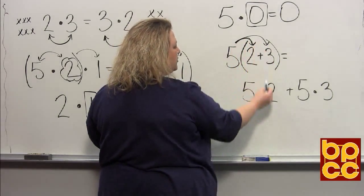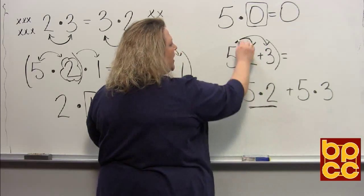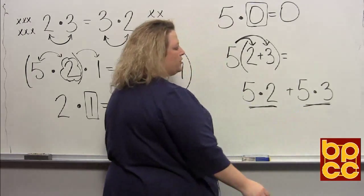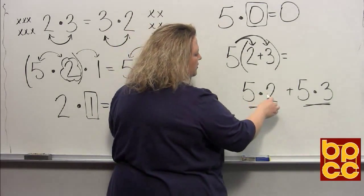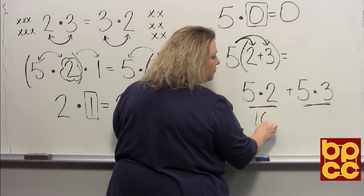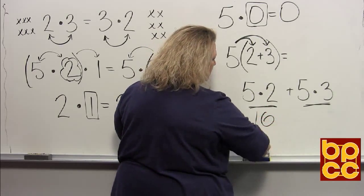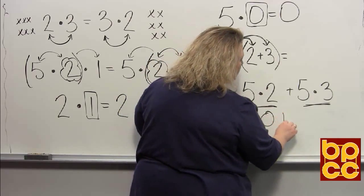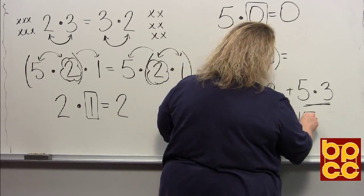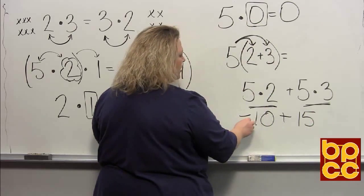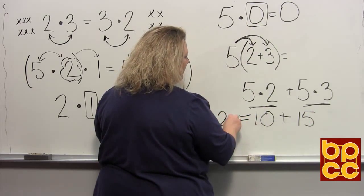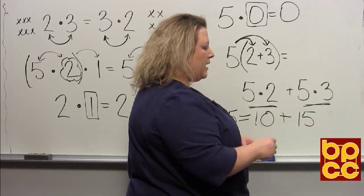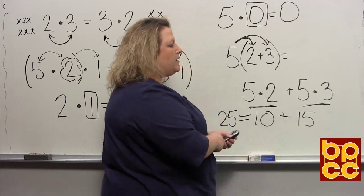So that would be 5 × 2, that's what that means, and then 5 × 3. And order of operations says that you do multiplication first, so that would be 5 × 2 would be 10, 10 plus 5 × 3 would be 15, which gives you a total of 25. 10 plus 15.